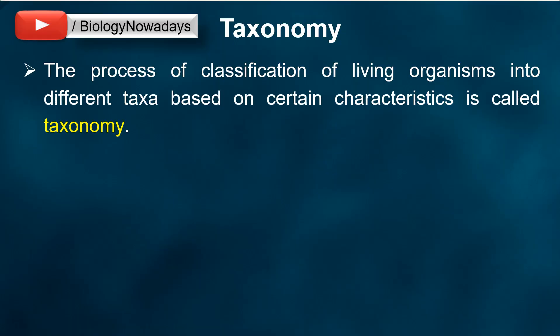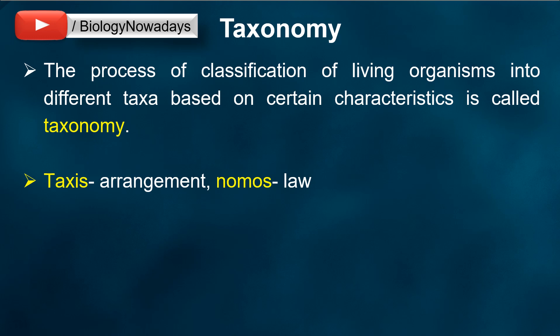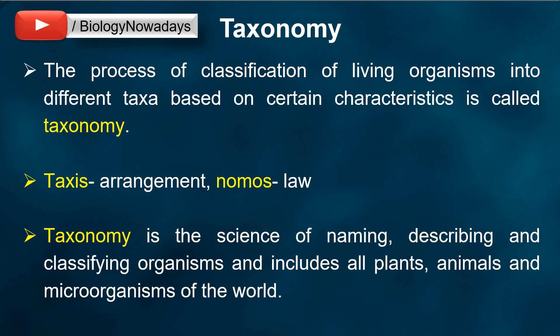The process of classification of living organisms into different taxa based on certain characteristics is called Taxonomy. The term Taxonomy is derived from the Greek word Taxis, which means arrangement, and Nomos, which means law. Taxonomy is the science of naming, describing and classifying organisms, and includes all plants, animals and microorganisms of the world.